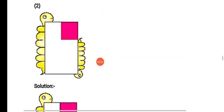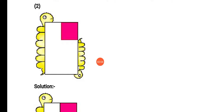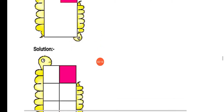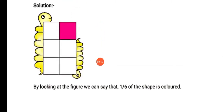Now figure 2 — there is a big rectangle in which one pink colored square is there. Using our scale and pencil, we will draw such partitions, and according to the first pink square we will draw other squares also. Total there are 6 squares, from which 1 is colored. So our answer will be 1 upon 6. By looking at the figure, we can say that 1 sixth of the shape is colored.